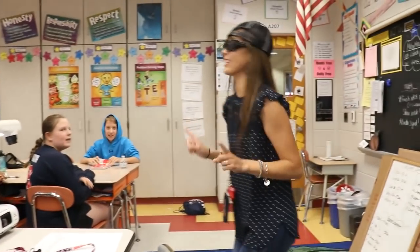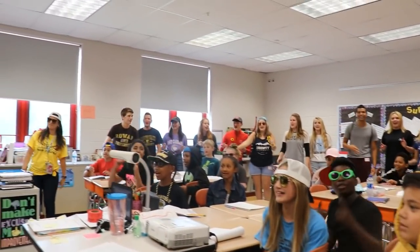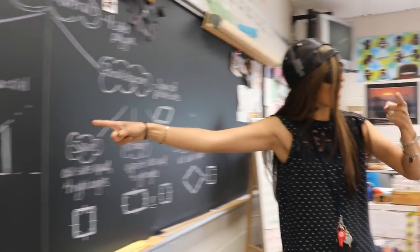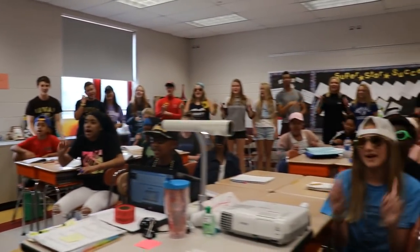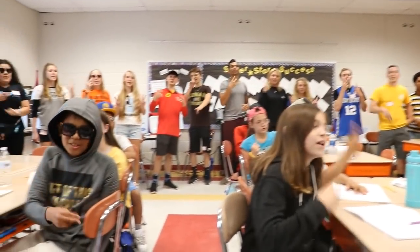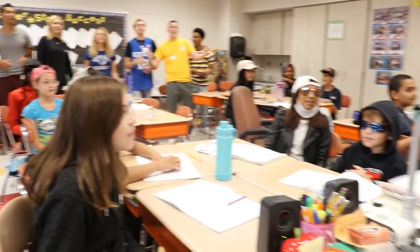One, two, three, four — quadrilaterals, can you tell me more? Many different types, that's right, you can't ignore. How many sides? Count, there's four. Here comes the trapezoid: one pair of parallel lines, only has one. The other pair of lines intersect. On to the next quad — the parallelogram, sure to make you stun. Parallel pairs, two, not just one. Three types of parallelograms under the sun.